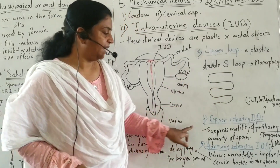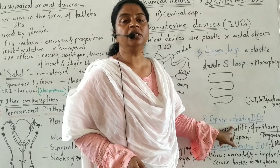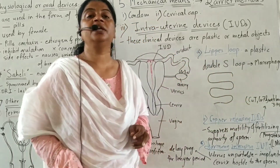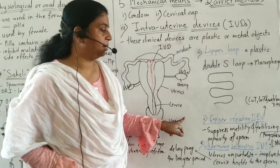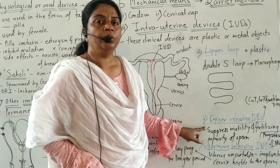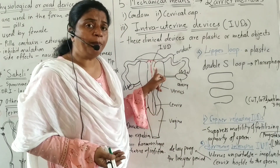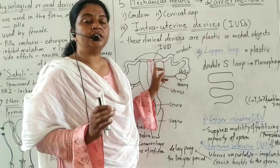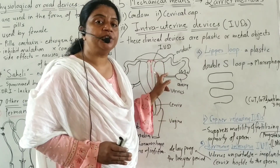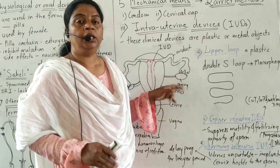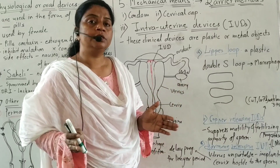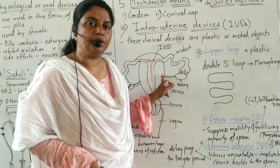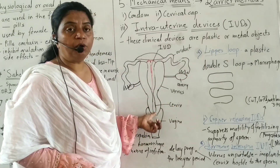The second type is copper-releasing IUDs. Copper T, Copper 7, and Multiload 375 are examples of copper-releasing IUDs. Copper T releases copper ions, which immobilize the sperm as well as decrease the fertilizing capacity of sperm. This leads to no fertilization.